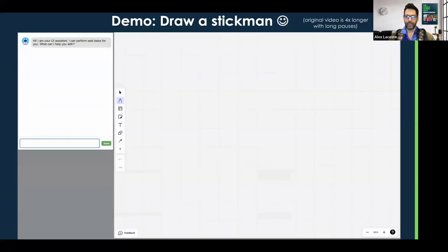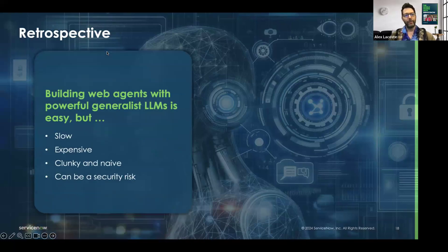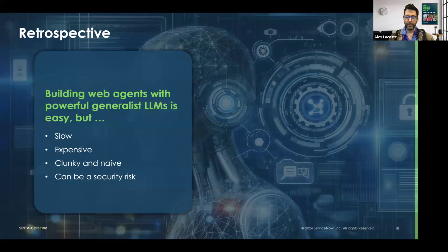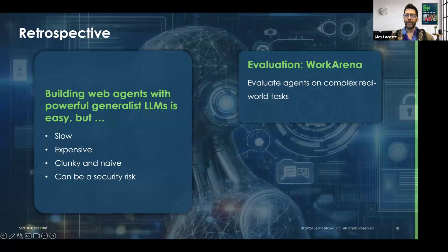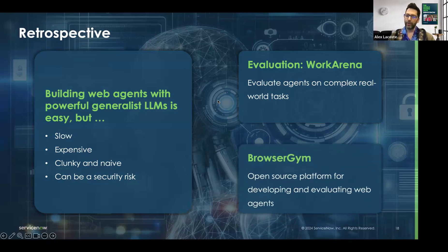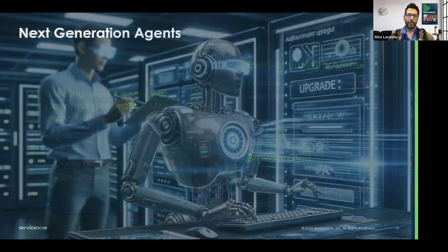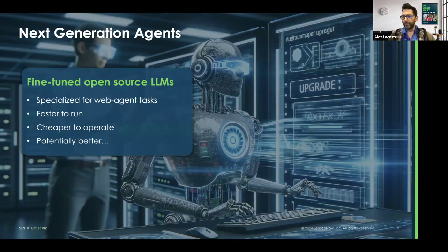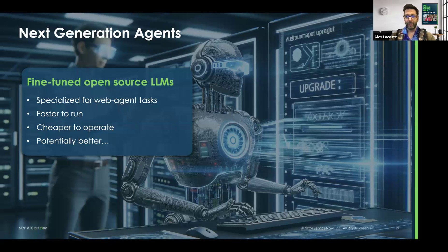In retrospective, what did we learn? We learned that building web agents with a very powerful LLM works, but it's slow, expensive, clunky, and naive. It can also be a security risk — we won't dive into that today, but we will have to think about it before releasing agents. We also showed WorkArena — a new benchmark for evaluating agents on corporate tasks — and BrowserGym, an open-source platform for developing and evaluating web agents.